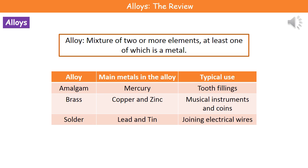The first alloy is amalgam, and the main metal in that alloy is mercury. We use that for the old silver fillings in teeth.